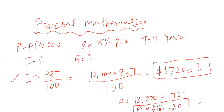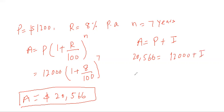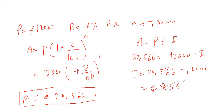If the question asks how much interest you earned under 8 percent per annum compound interest, remember that total amount A equals principal P plus interest I. We know A is 20,566 and P is 12,000, so I equals 20,566 minus 12,000, which gives you 8,566 dollars in compound interest.